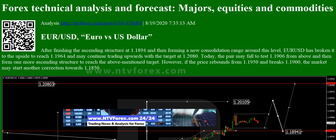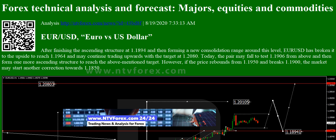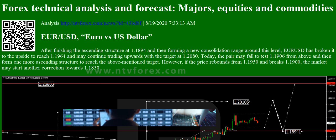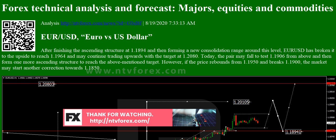EURUSD: After finishing the ascending structure at 1.1894 and then forming a new consolidation range around this level, EURUSD has broken it to the upside to reach 1.1964, and may continue trading upwards with the target at 1.2080. Today, the pair may fall to test 1.1906 from above and then form one more ascending structure to reach the above-mentioned target.